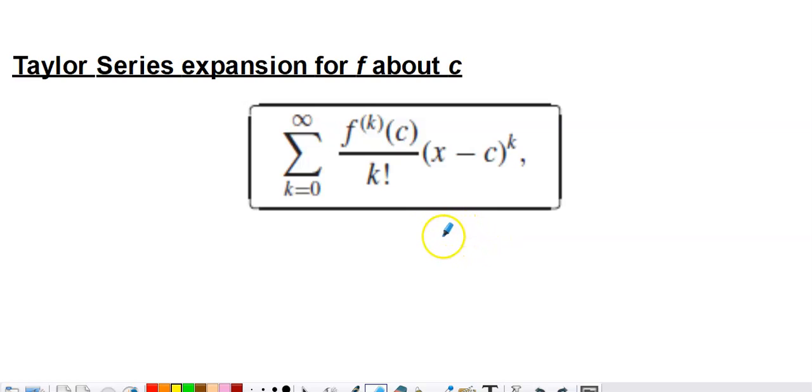To make that happen, we have to find a bunch of derivatives of the function. This is the kth derivative evaluated at c divided by k factorial times x minus c to the kth power. When you're asked to carry out one of these expansions, the function is going to be specified, the c value is going to be specified. We just have to build the series and figure out what the rule for it is.